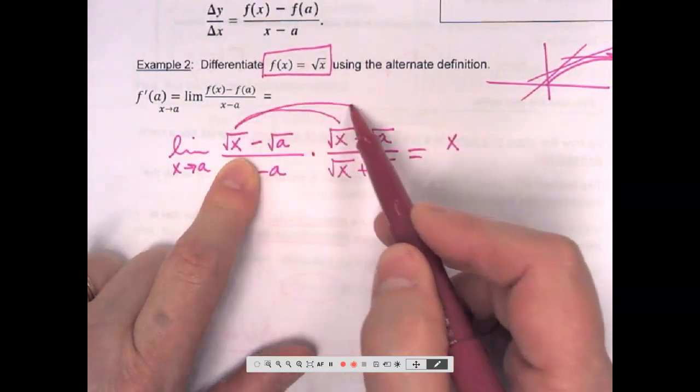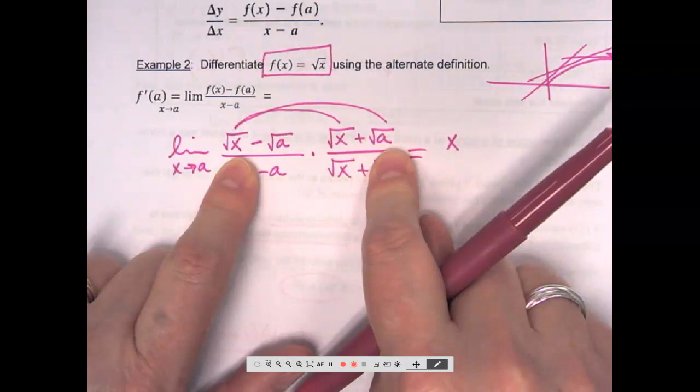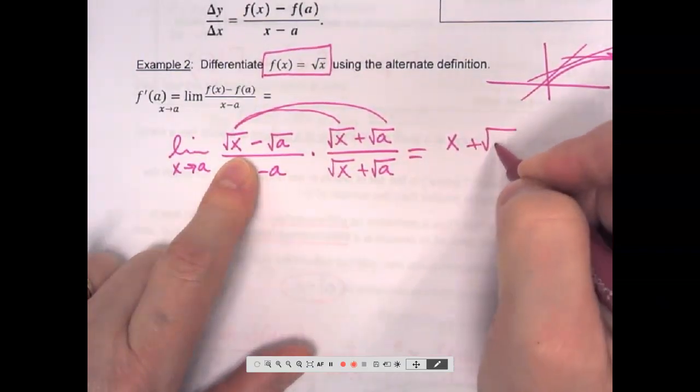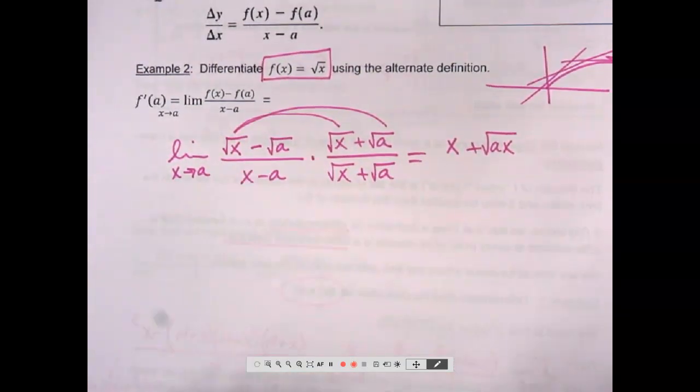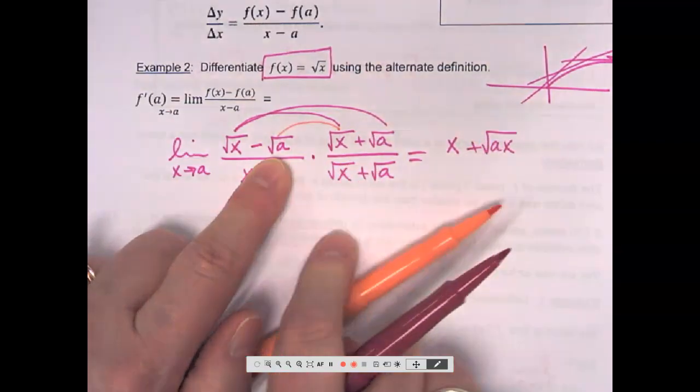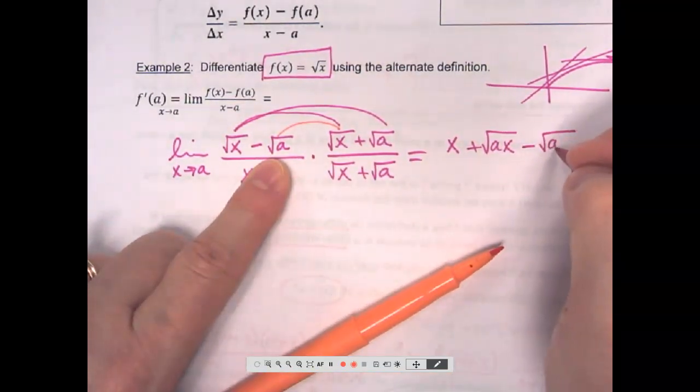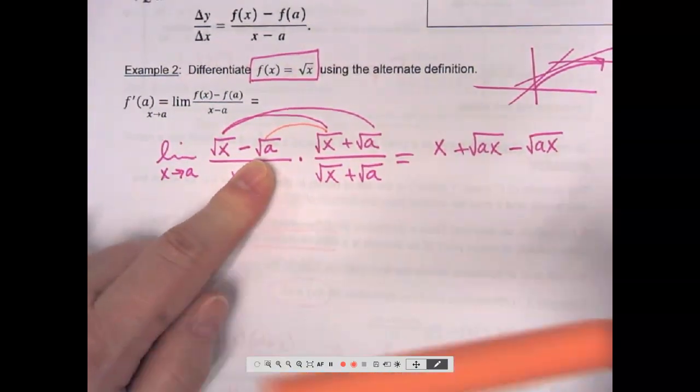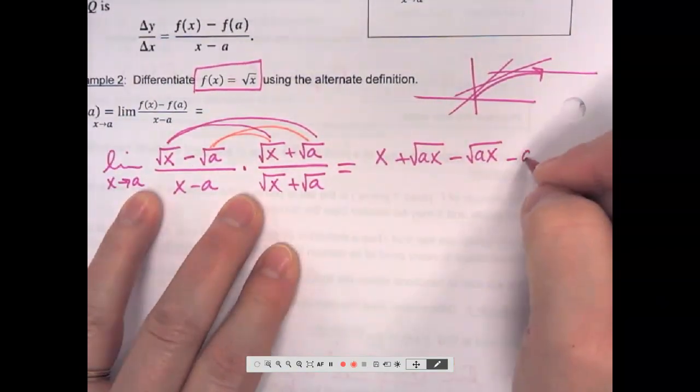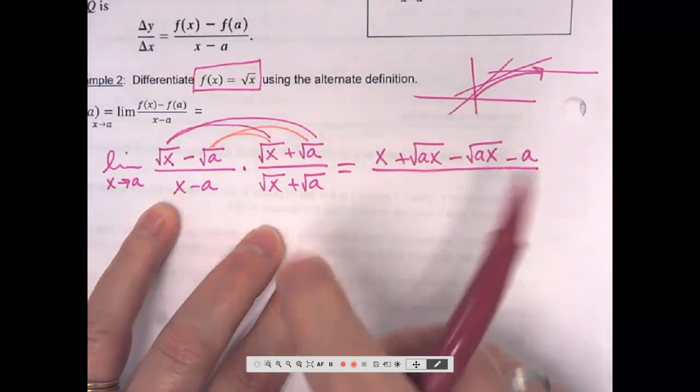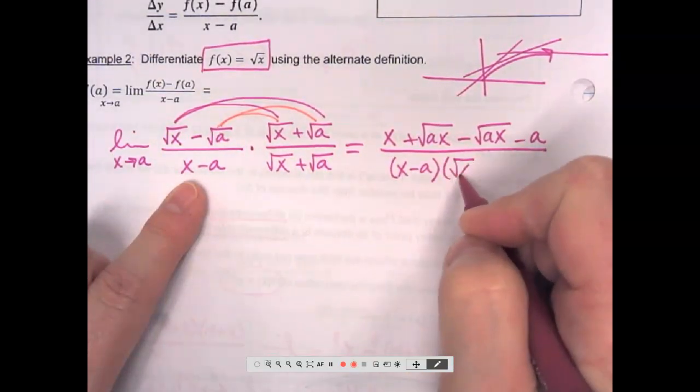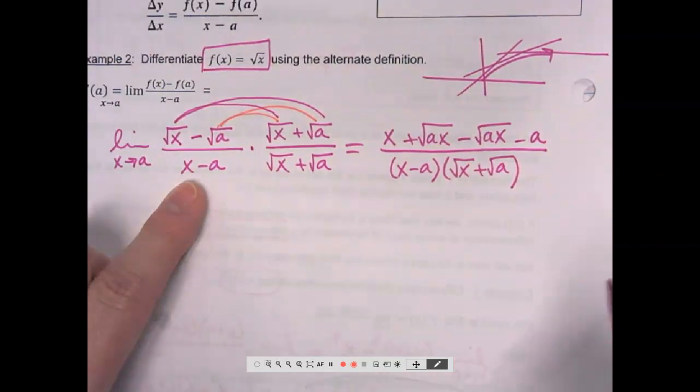Oh, interesting. What is square root of X times square root of X? X. What is square root of X times square root of A? Square root of AX. What is negative square root of A times square root of X? Minus square root of AX. Whew. Those are going to be gone. That's good news. And then, what is square root of A times square root of A? Minus A. Over. I'm not going to foil this. I'm going to leave it. X minus A. Square root of X plus square root of A. Thankfully, these cancel.